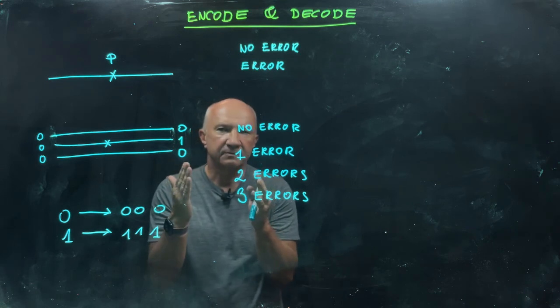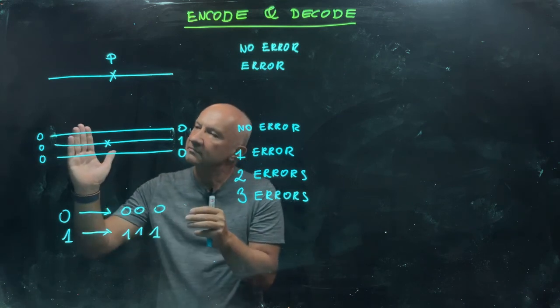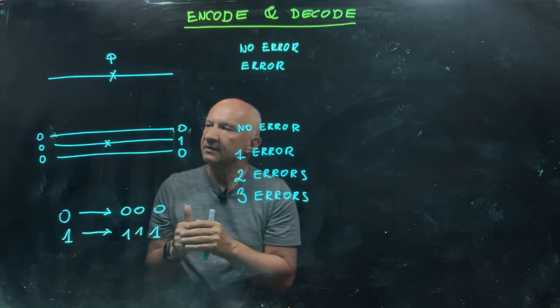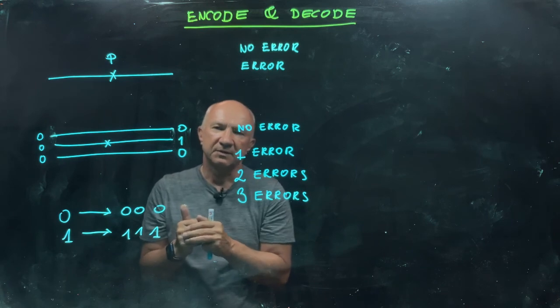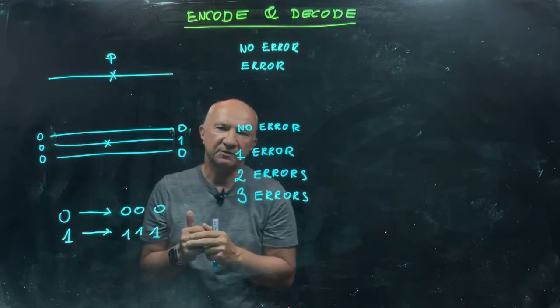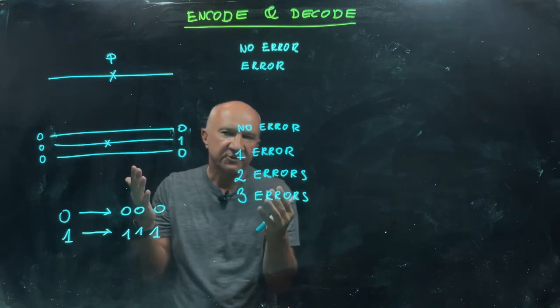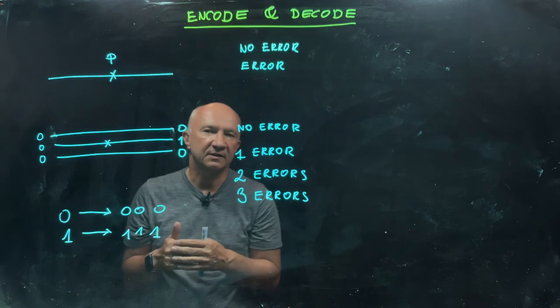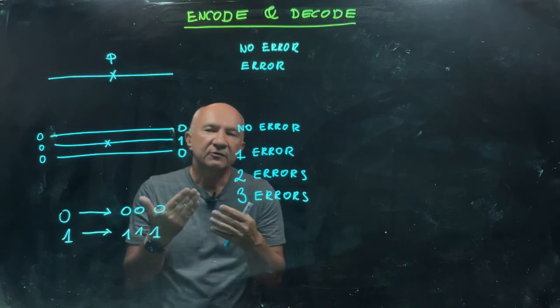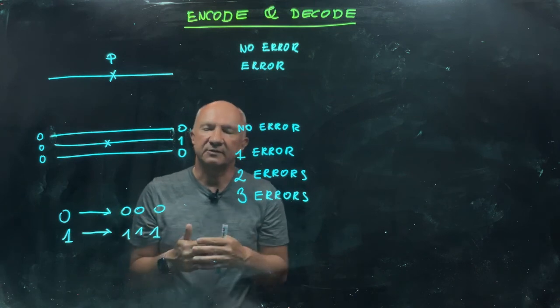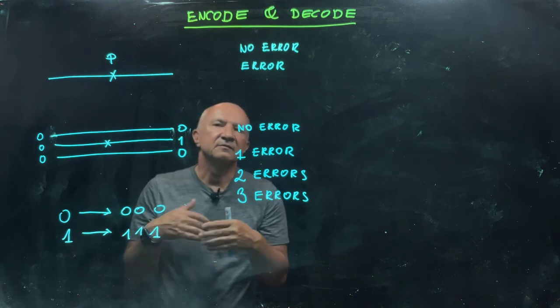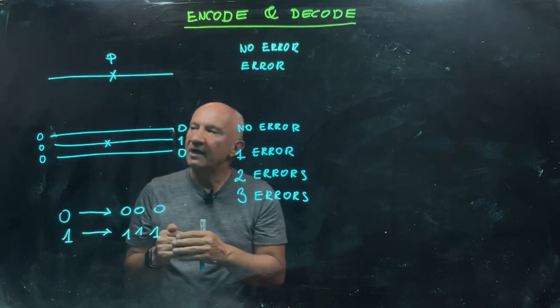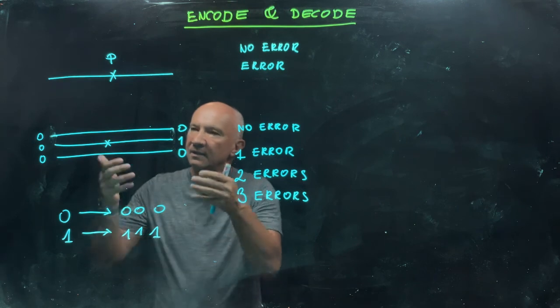Whenever nothing happens, the majority rule works. When one error happens, so one of the bits at the output is wrong, the majority rule works nicely and you reset it into the correct value. However, if you have two or three errors, the majority rule doesn't work—you reset it into wrong values.